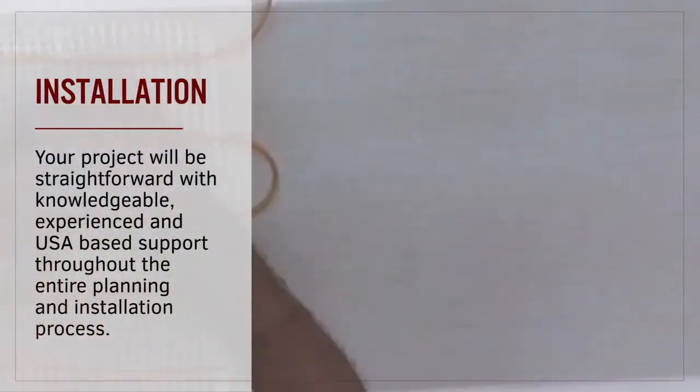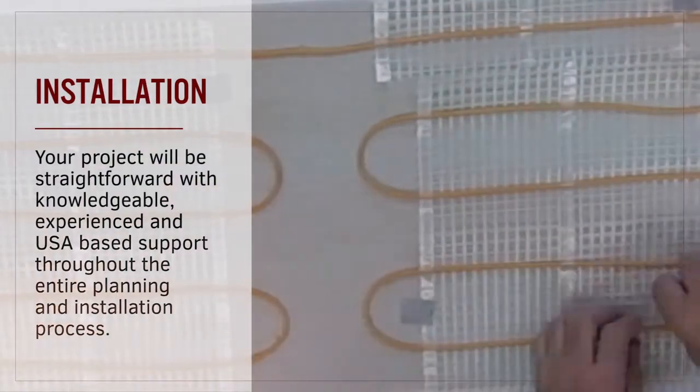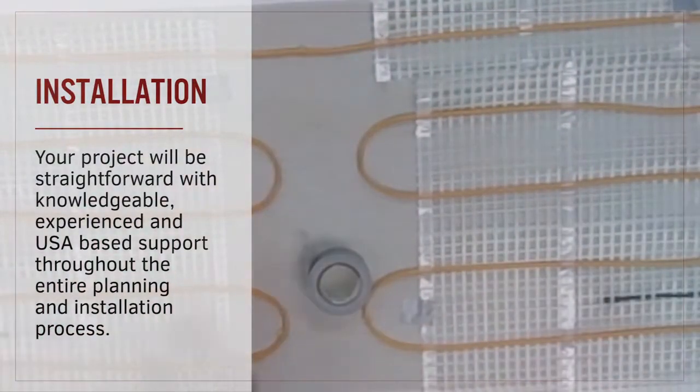ThermoTile mats offer an efficient one-step installation. Position your heating mats along the floor, install your floor sensors, and cover the system with your mortar and floor covering.